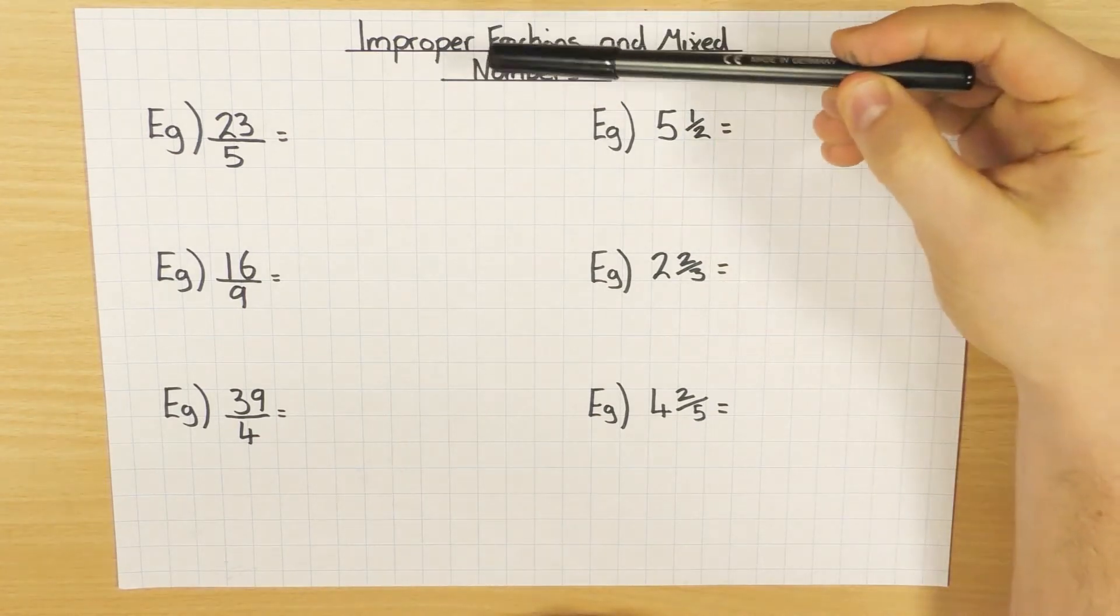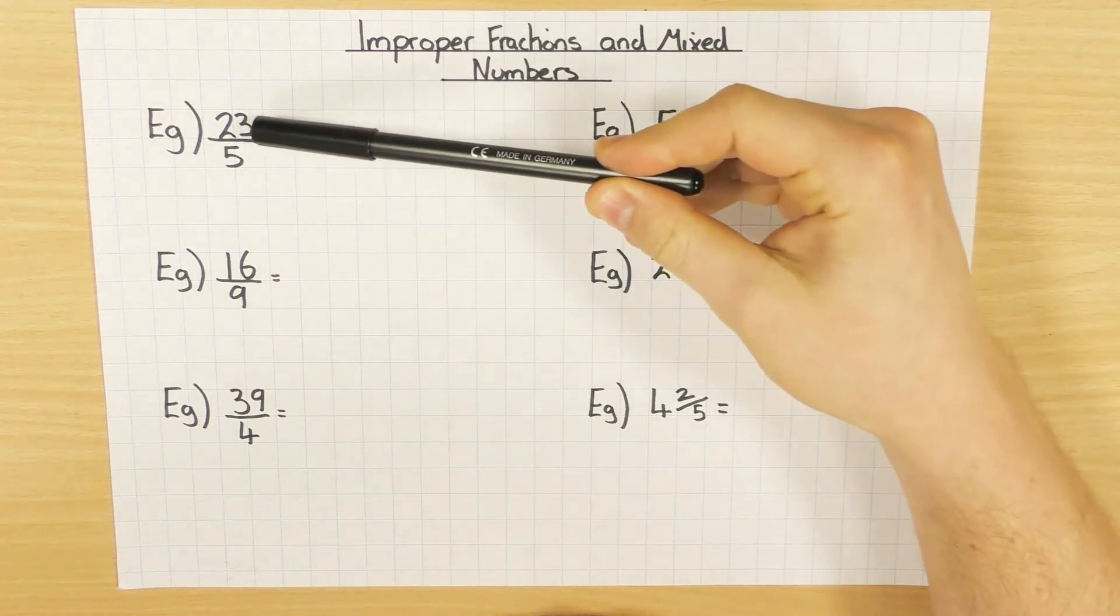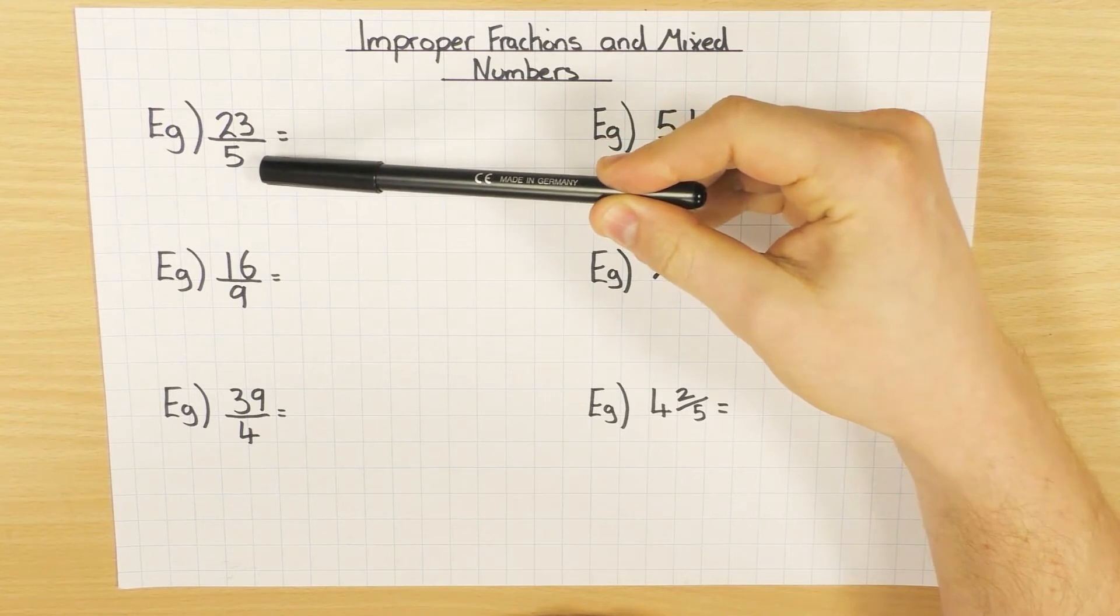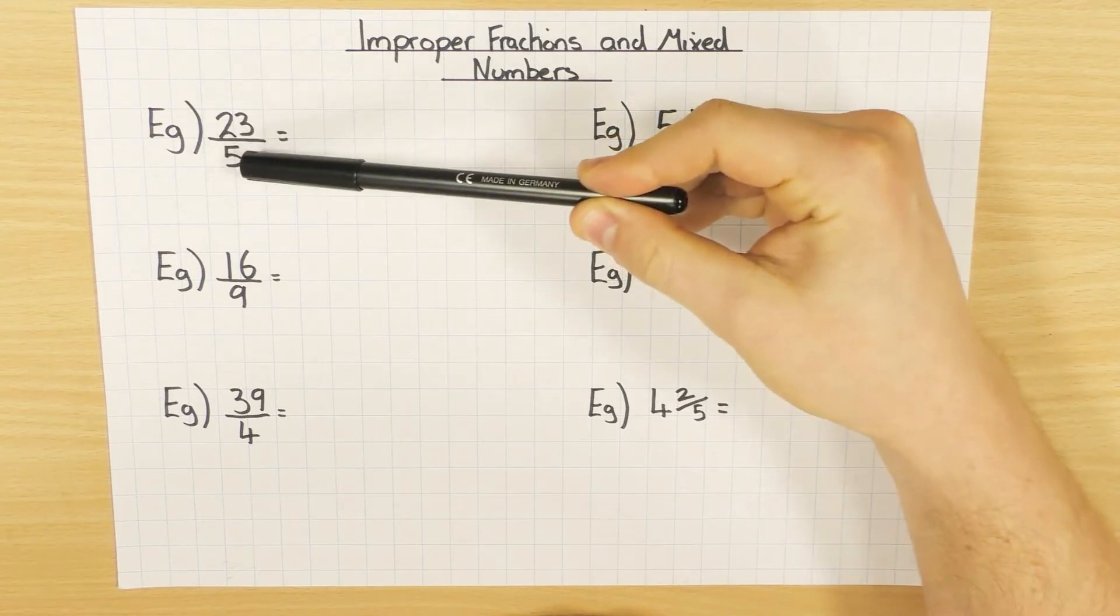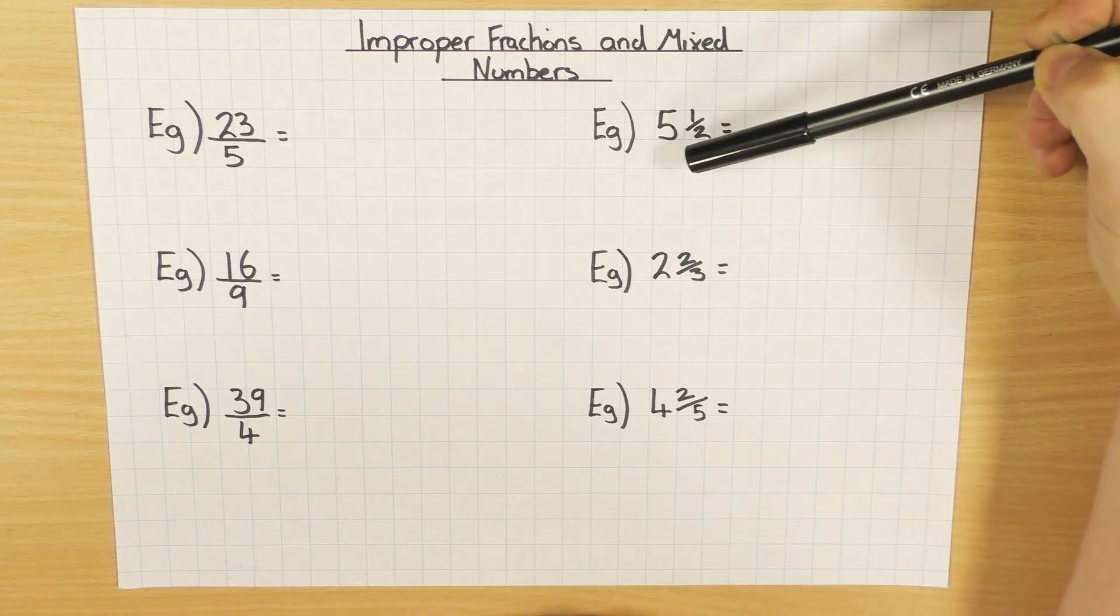So improper fractions, also known as top-heavy fractions, is when the top number is actually bigger than the bottom number, so we call that improper or top-heavy. And the idea is to put it to a mixed number, which looks something like the right-hand side.